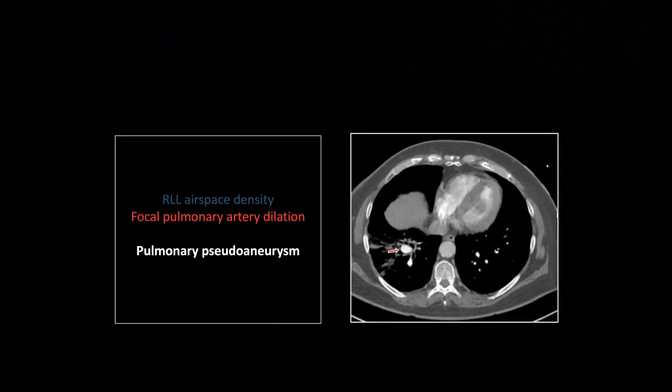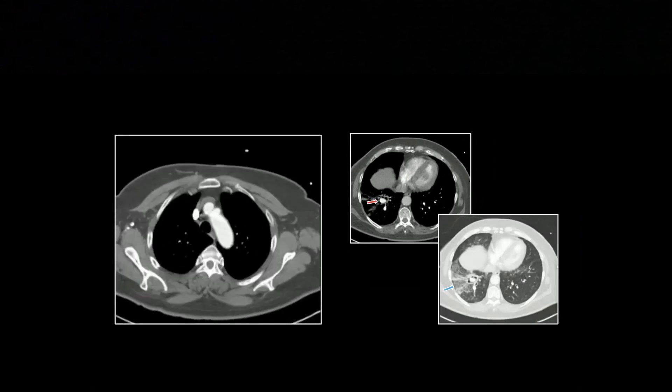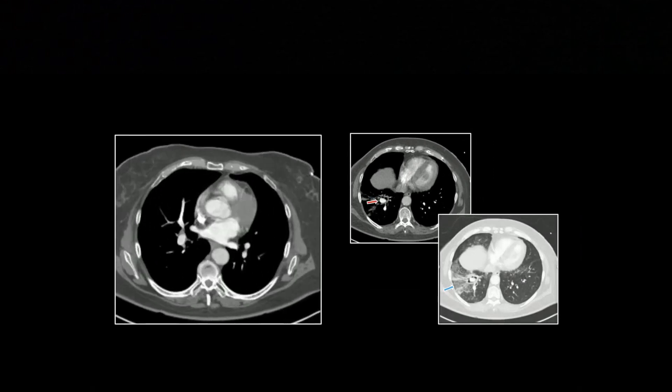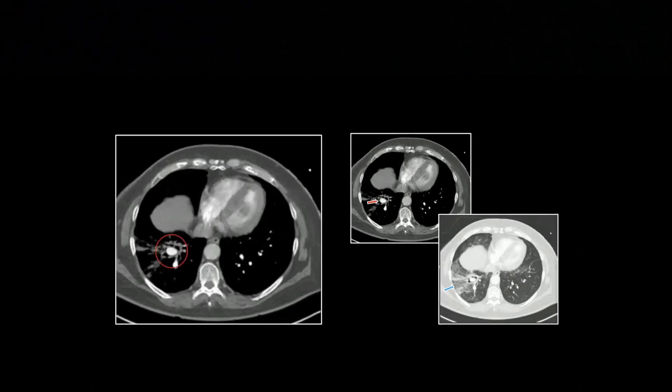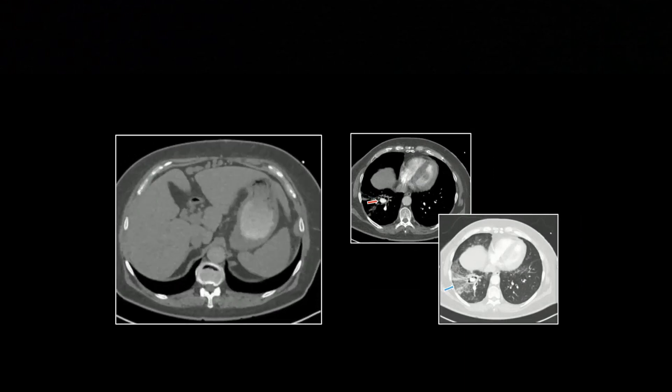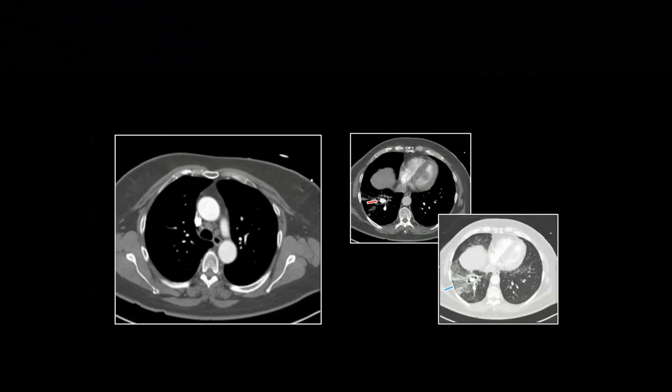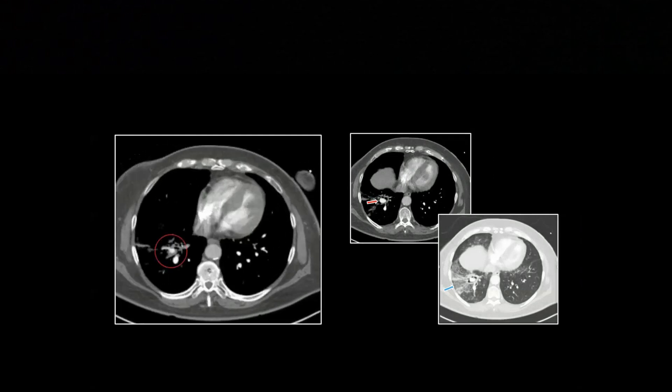But there is this focus of contrast enhancement, nice, well-circumscribed, rounded focus of contrast enhancement. This will happen in these destructive pneumonias where you develop, it essentially eats into the pulmonary artery and you develop a pseudoaneurysm there. If you watch that, it doesn't lead anything. It's sitting right in the middle of that focus of lung destruction.